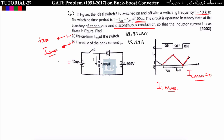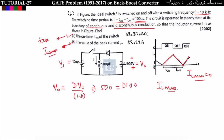The given parameters are: supply voltage V_s and output voltage V_0. Notice the polarity of the output voltage is from minus to plus, which is opposite to my convention, so V_0 is positive. Using the formula V_0 = d·V_s / (1 - d): 500 = 100d / (1 - d), giving 500 - 500d = 100d, so 600d = 500, and d = 5/6.